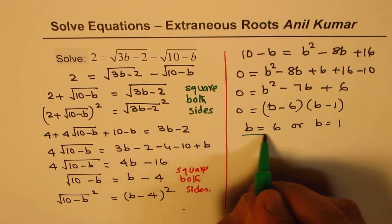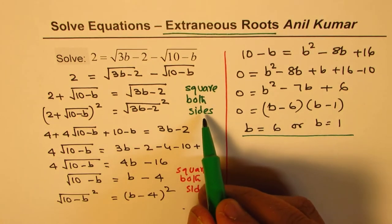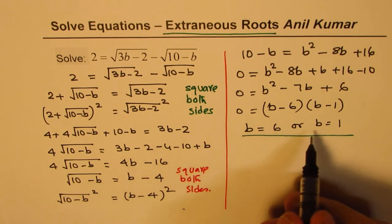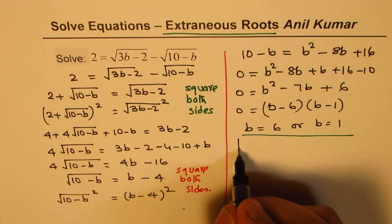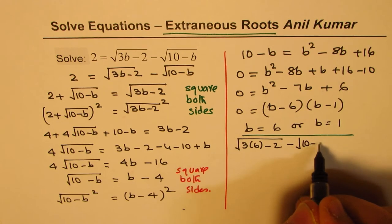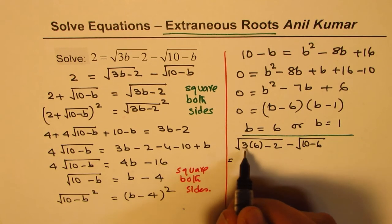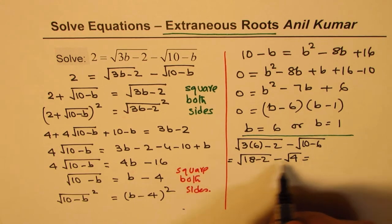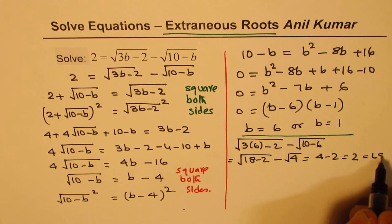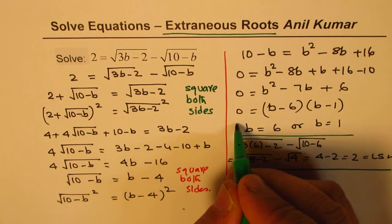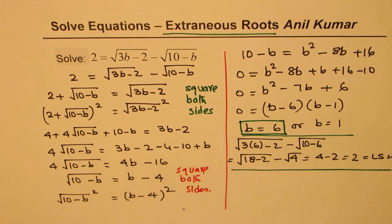Now we need to check for extraneous roots, since squaring makes negative things positive. So let's check. We'll substitute b equals 6 in our equation. So if I write square root of 3 times 6 minus 2 minus square root of 10 minus 6, that is square root of 18 minus 2 which is square root of 16 and here we get 4. So that is 4 minus 2 is indeed 2 which is the left side. So this is perfectly fine. So b equals 6 is definitely the right solution.